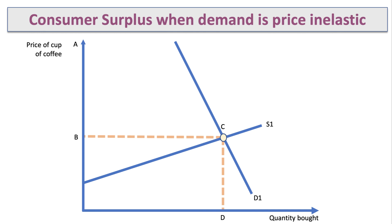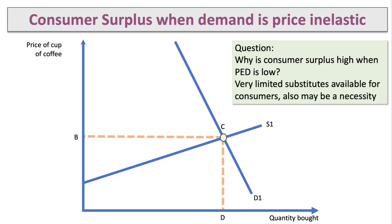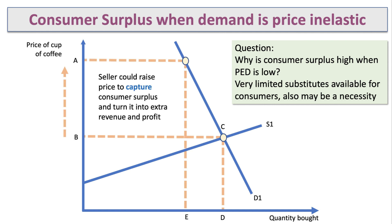Contrast that with inelastic demand, where there's a large area of consumer surplus — the demand curve may not even cut the y-axis on the diagram. Consumer surplus is high when elasticity is low, typically because there are very few close substitutes, and it may also be a necessity. Producers can take advantage of this and raise the price from B to A.